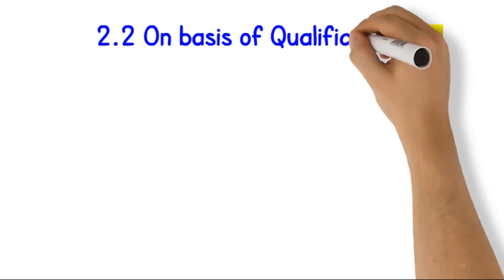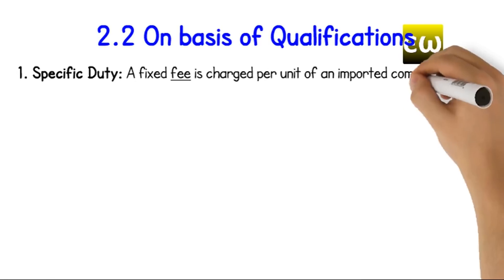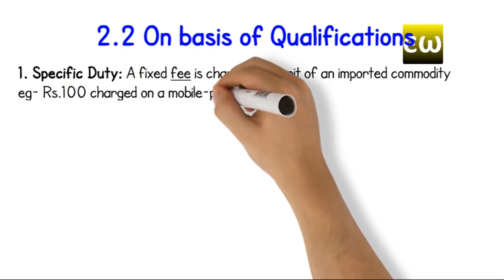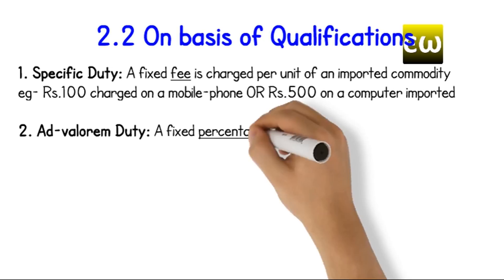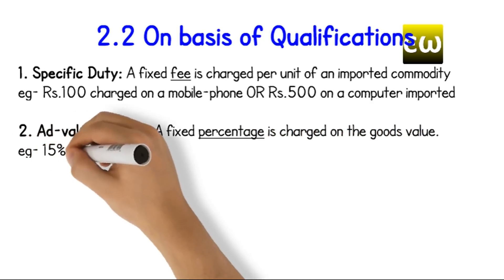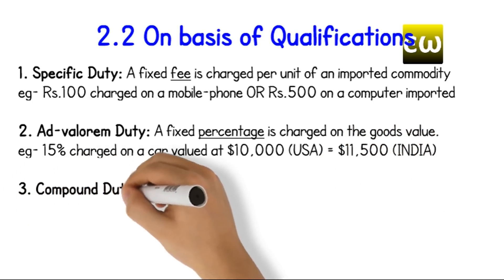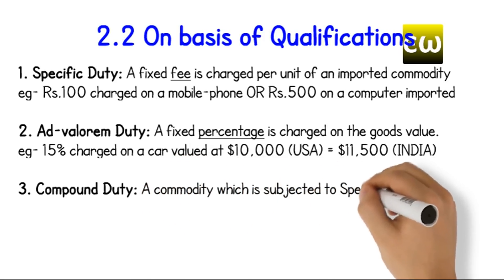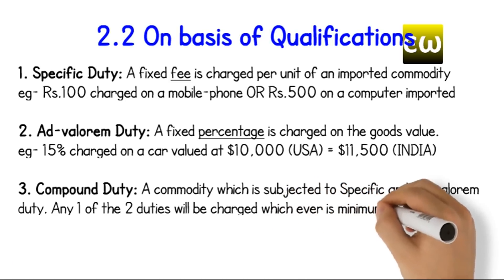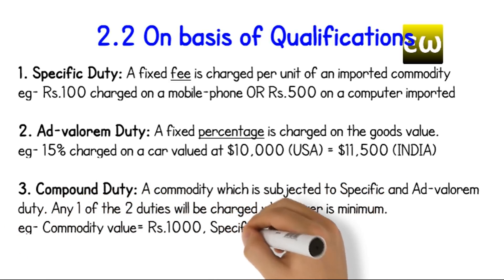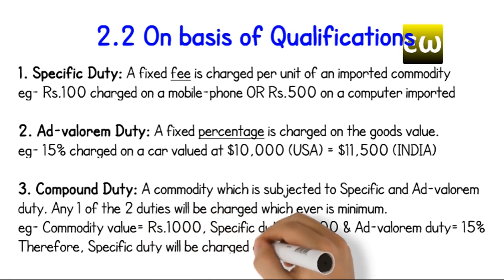On the basis of qualifications: 1. Specific duty is a fixed fee charged per unit of an imported commodity — for example, rupees 100 charged on a mobile phone or rupees 500 on a computer imported. 2. Ad valorem duty is a fixed percentage charged on the goods' value — for example, 15% charged on a car valued at $10,000 in the USA, which will now cost $11,500 in India. 3. Compound duty is when a commodity is subjected to both specific and ad valorem duty; whichever is the minimum will be charged — for example, commodity value equals rupees 1,000, specific duty equals rupees 100, and ad valorem duty equals 15%; therefore, specific duty will be charged as it is lower.